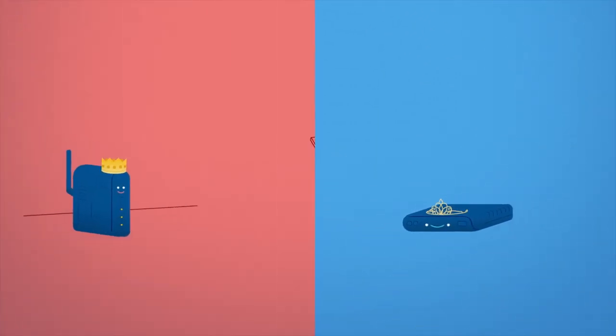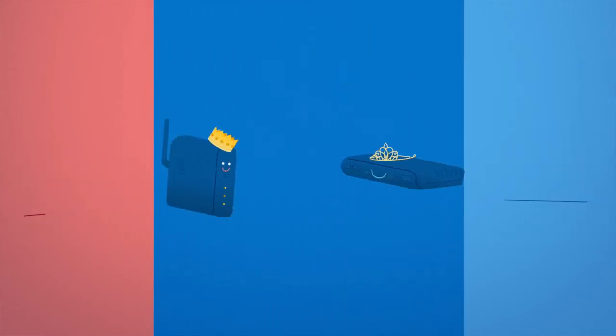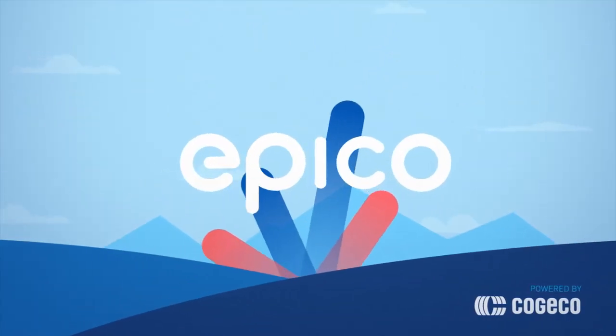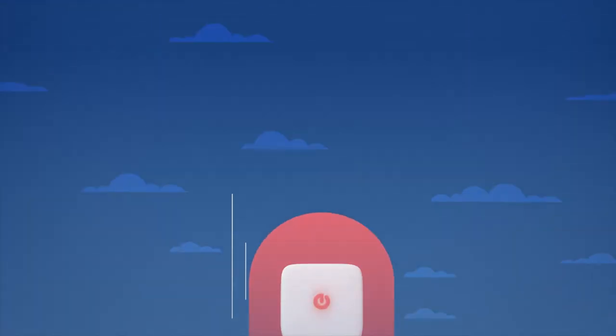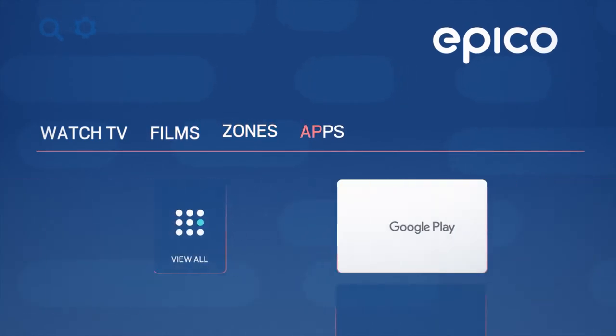Once upon a time, Princess TV and Prince Internet lived in two different worlds. Until one day, they were joined in the land of Epico. By uniting Internet and TV in one experience, you can watch whatever you want, when you want, all from one easy-to-use interface.